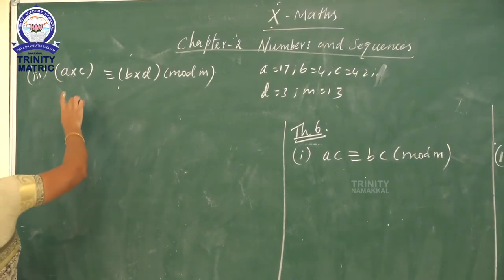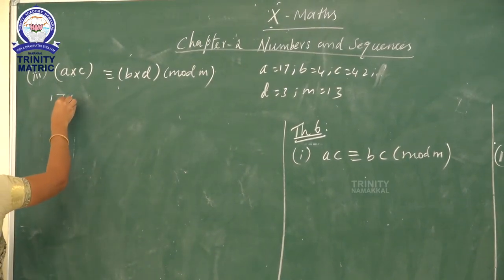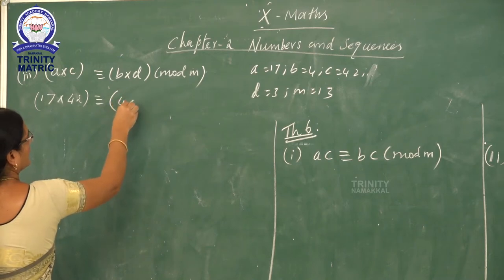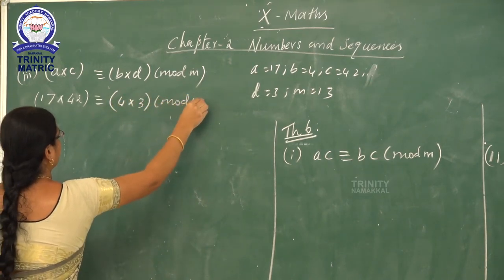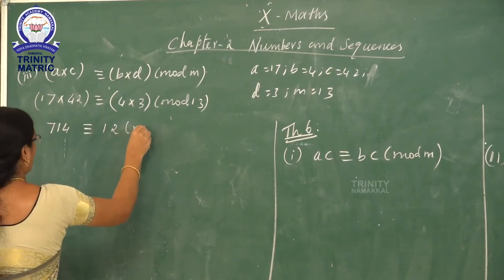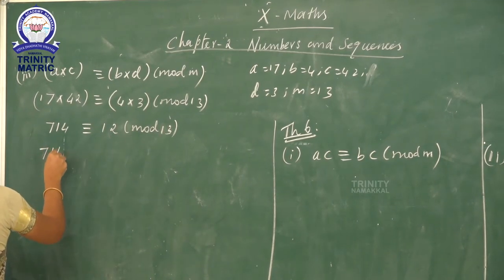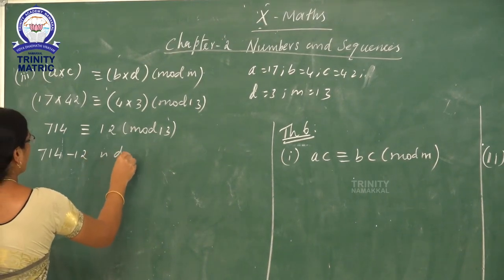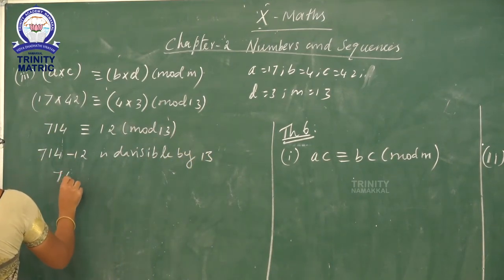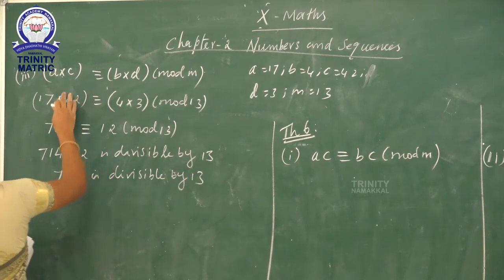The third condition is: A into C congruent B into D mod M. Applying the values: 17 into 42 congruent 4 into 3 mod 13. That is, 714 congruent 12 mod 13. The difference 714 minus 12 equals 702, and 702 is divisible by 13. So the third condition is also verified.